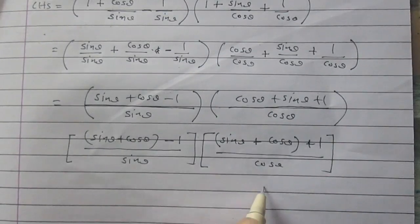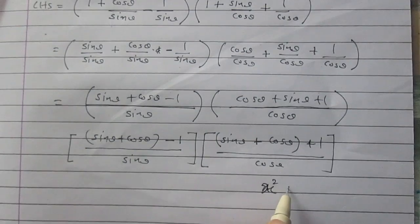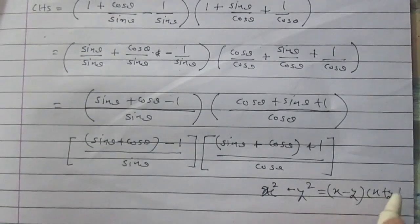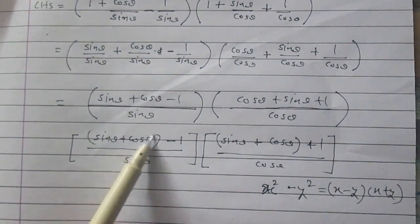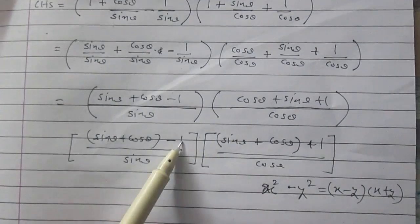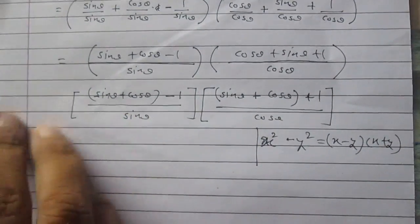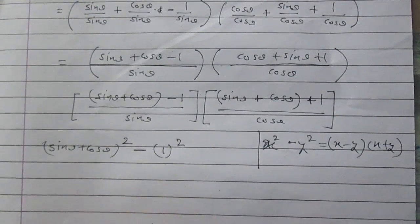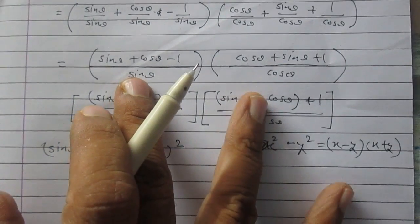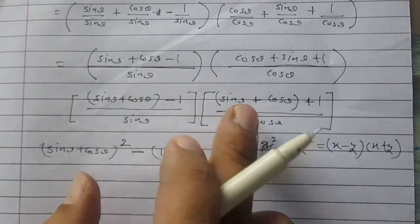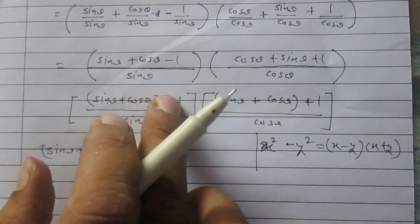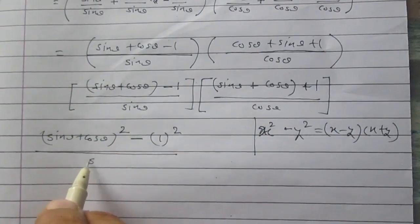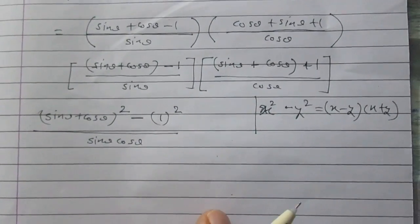Now using the identity x² - y² = (x - y)(x + y), where x = (sin θ + cos θ) and y = 1, the product of the two numerators is (sin θ + cos θ)² - 1². The denominators multiply to give sin θ · cos θ. So the LHS equals [(sin θ + cos θ)² - 1] / (sin θ · cos θ).